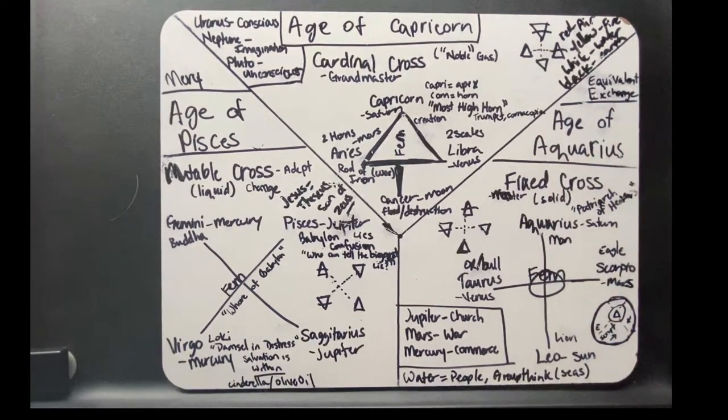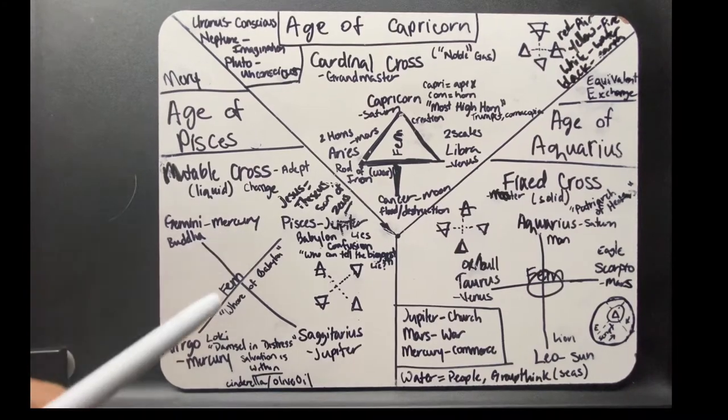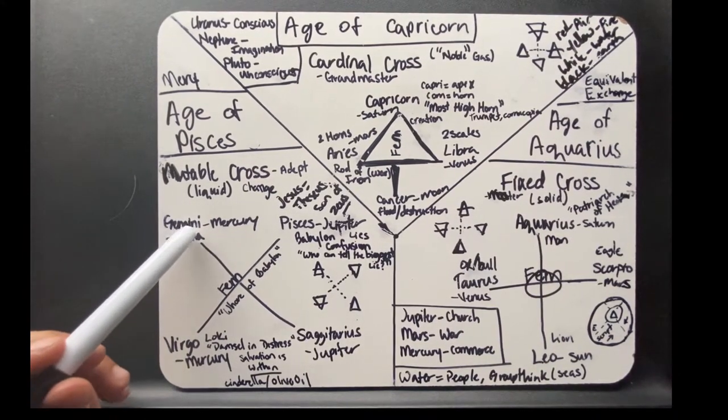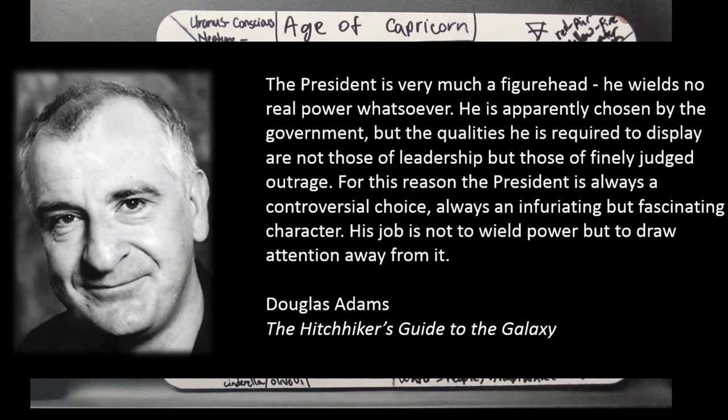Another thing to point out about this age: Trump. Trump is a Gemini, and like Mercury, he's very, very two-faced. I've never seen so many people with so wildly opposite opinions of the same person. I believe Trump is another distraction. Like Douglas Adams wrote, the president is very much a figurehead. He wields no real power whatsoever. He's apparently chosen by the government, but the qualities he's required to display are not those of leadership but those of finely judged outrage. For this reason, the president is always a controversial choice, always an infuriating but fascinating character. His job is not to wield power but to draw attention away from it.